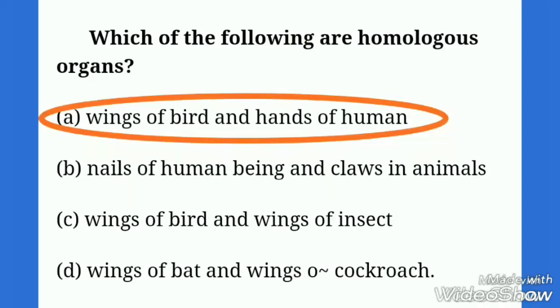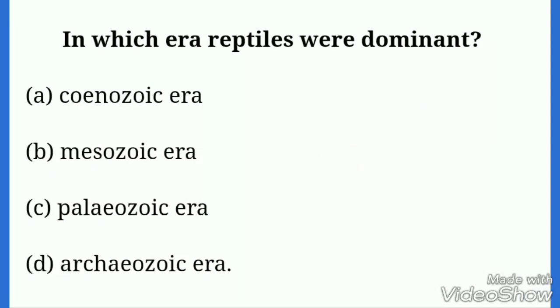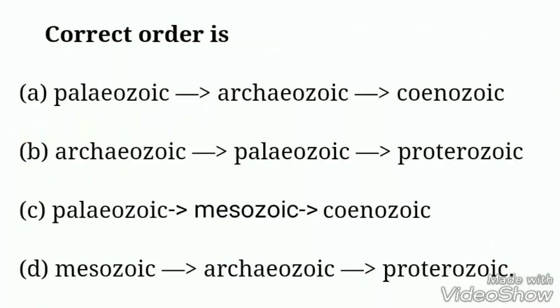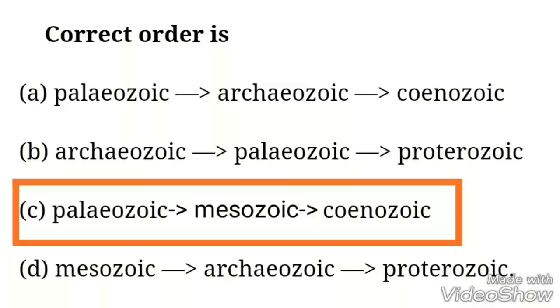Next question is: in which era reptiles were dominant? The correct option is in Mesozoic era the reptiles were dominant. The correct order of geological time scale is: the correct option is number C, it is Paleozoic era, Mesozoic era and Cenozoic era.